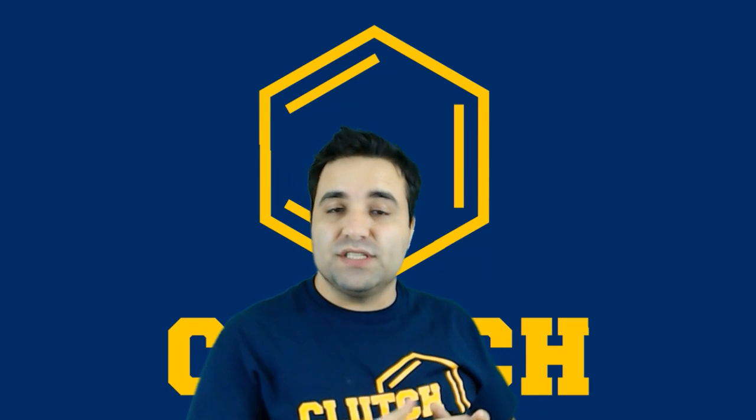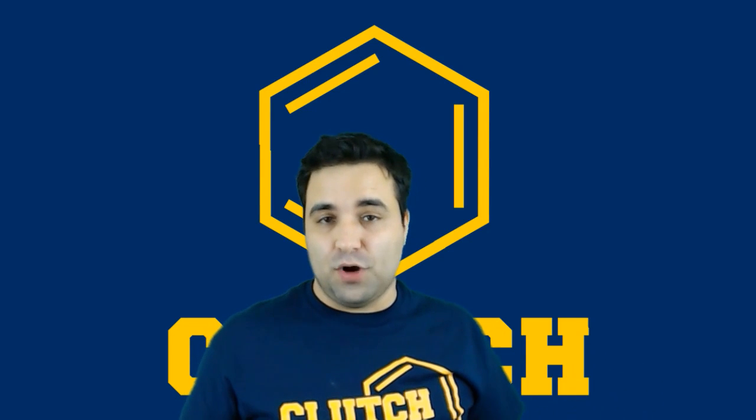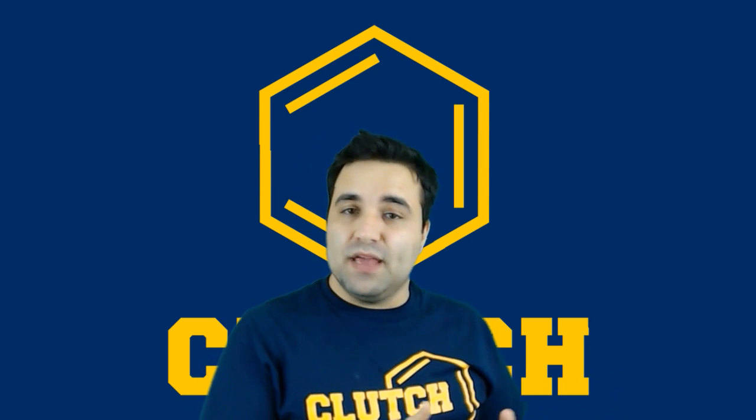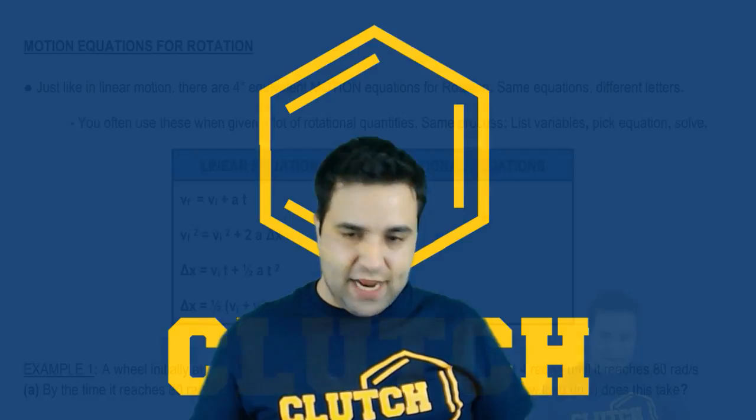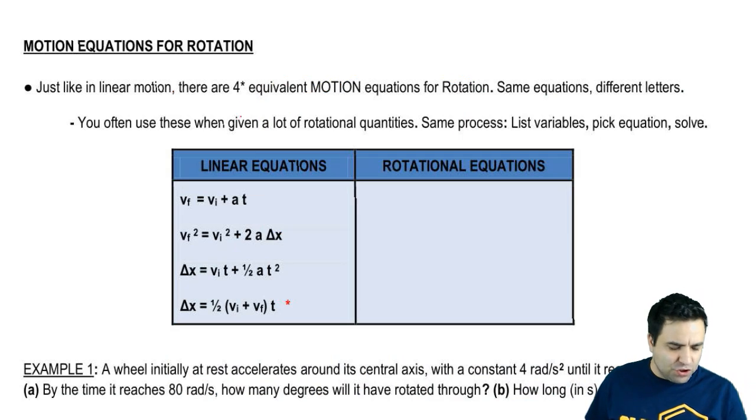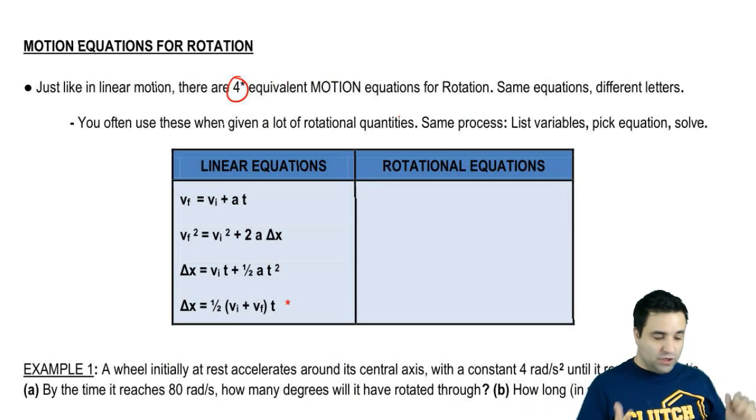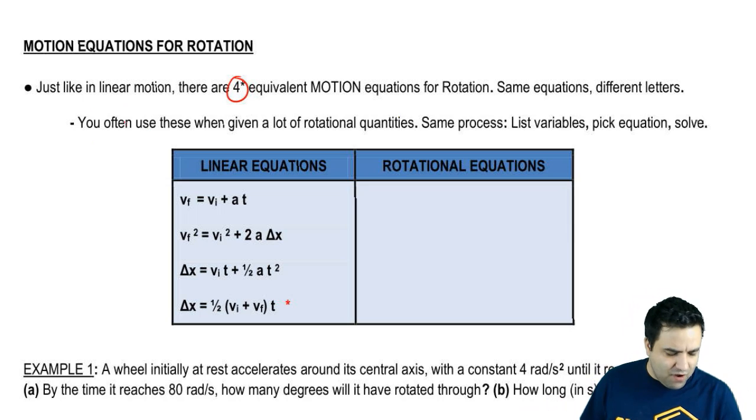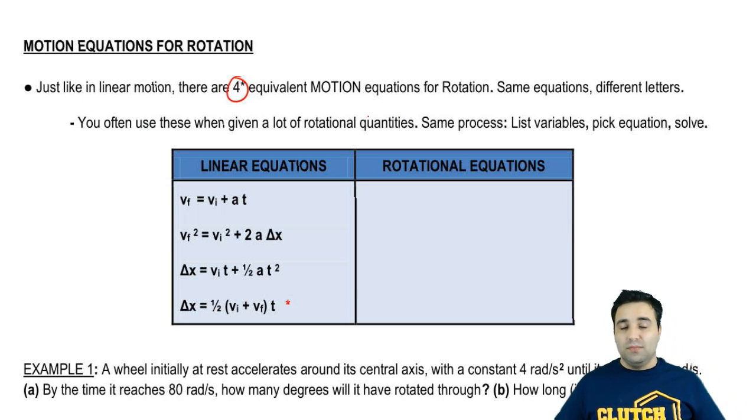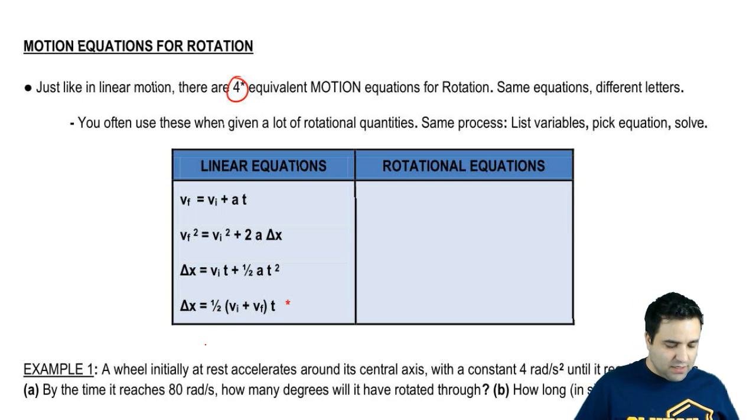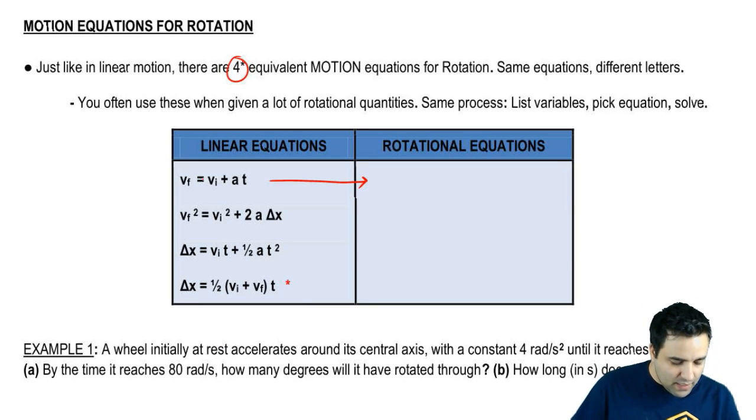Hey guys. So when we're doing linear motion, you may remember that you had a set of four equations that you would use to solve a whole bunch of different types of problems. Well, in rotational motion, it's exactly the same thing, except they're going to take different letters. Let's check it out. Just like in linear motion, there are four equivalent motion equations for rotation. Same equations, different letters.